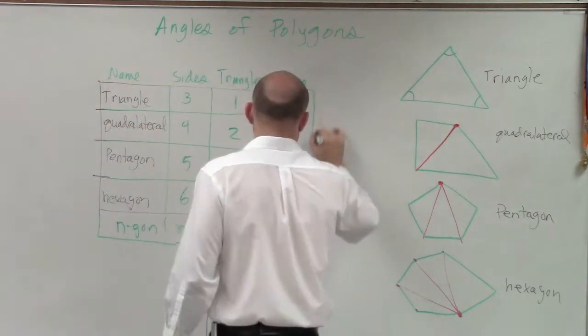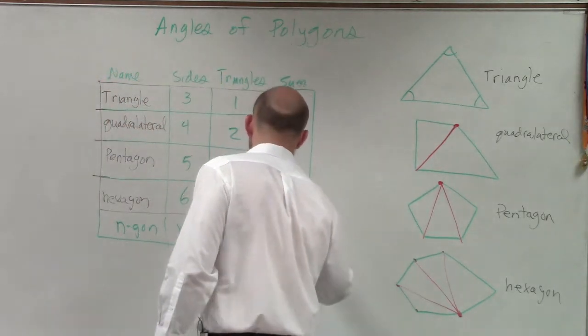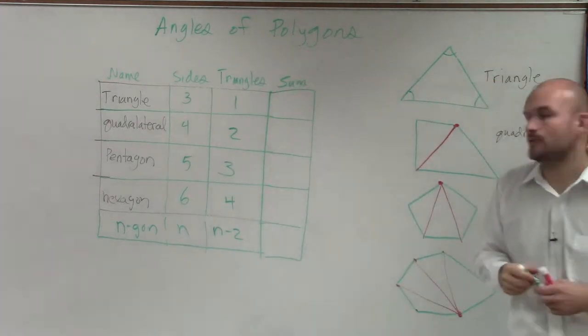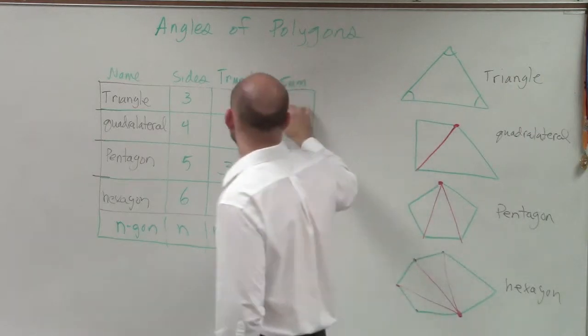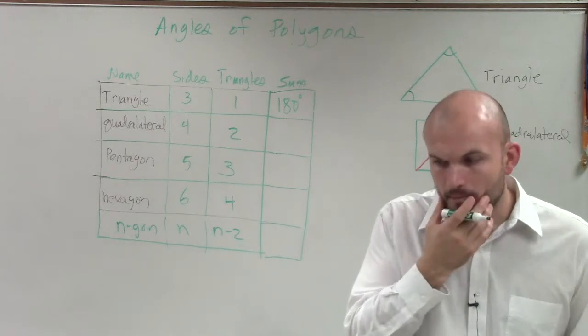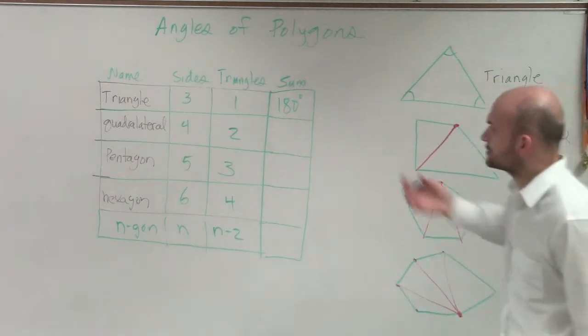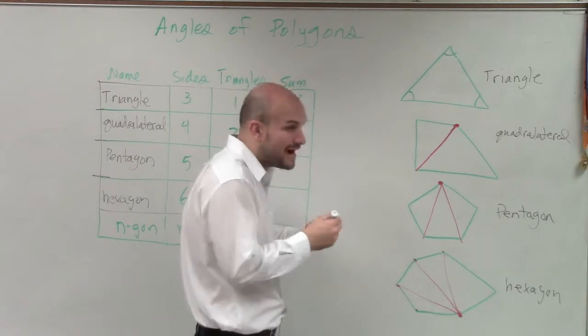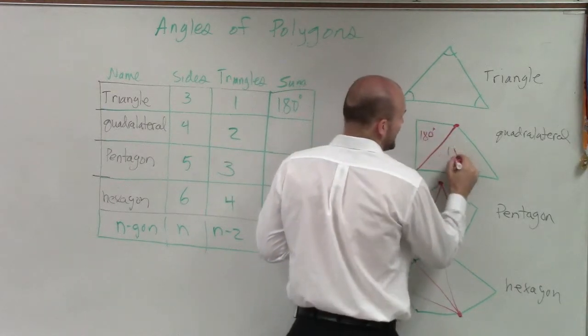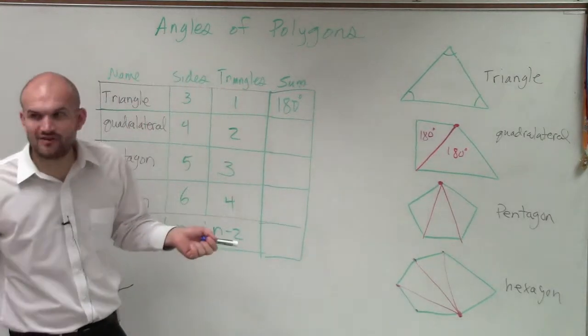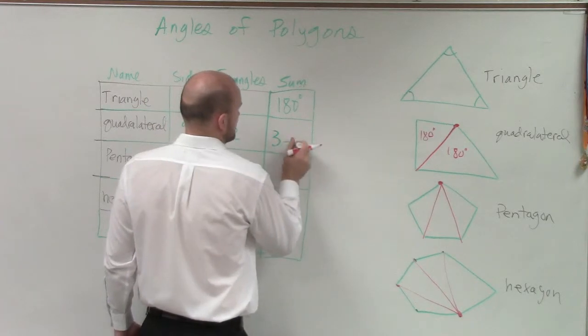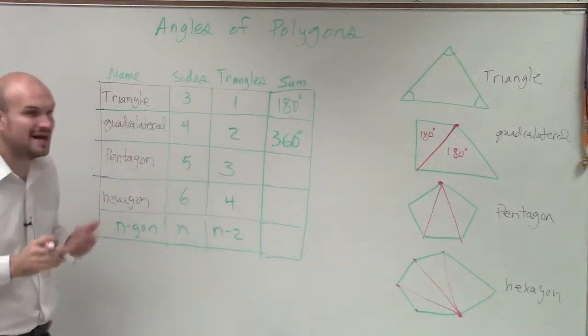So we have one more column to go over. Now we need to talk about the sum. Now, we already discussed the sum of our triangles is 180 degrees, right? But now, let's look at a quadrilateral. Well, if a quadrilateral has two triangles, right? That means that's 180 and that's 180. So what do you think is going to be the total of a quadrilateral? 360.